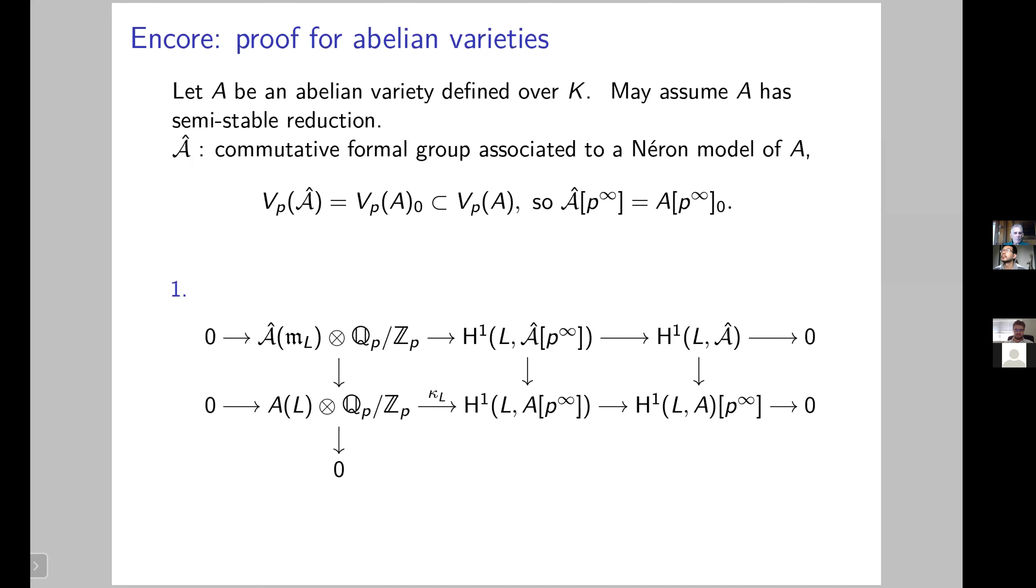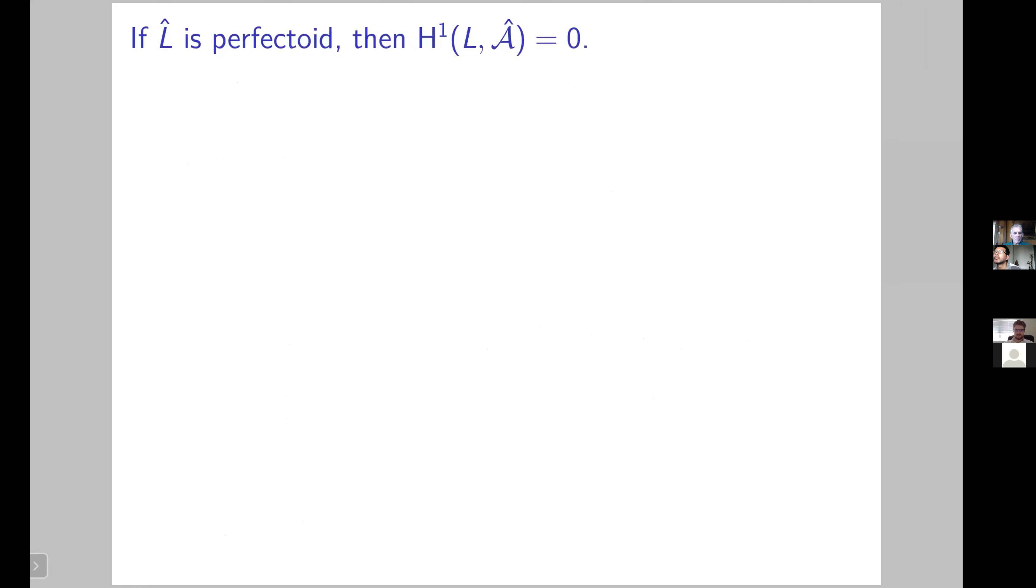It's very useful because we can look at this commutative diagram. Each line is the Kummer map for both the Abelian variety and the commutative formal group. And the vertical lines are simply induced by the inclusion of the commutative formal group inside the Abelian variety. But now, because we have this description of A[p^∞]_0 as the torsion points of the commutative formal group, the natural map that we are looking at in the theorem up here is the middle vertical map. To prove the theorem, really what we want and what Coates and Greenberg prove is that when L is perfectoid, then this Galois cohomology group that appears in the top right corner in this diagram is actually trivial. Because if you put zero, then indeed the image of the Kummer map coincides with the image of this vertical map in the middle.